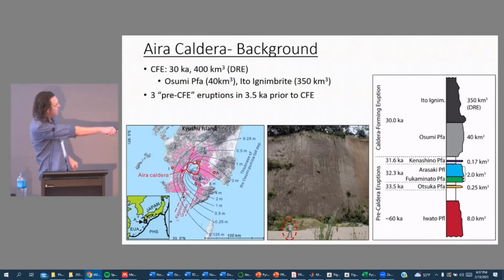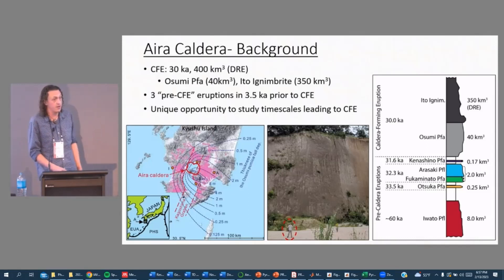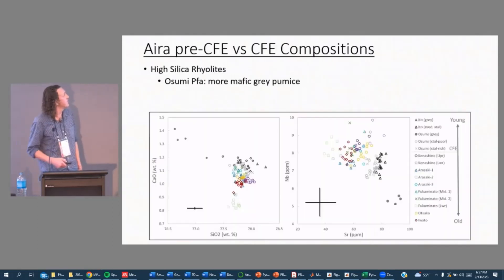What's really interesting about the Aira Caldera system is there were these three pre-caldera eruptions that preceded the Osumi and Ito ignimbrite. Three of them that occurred in the 3500 years before the caldera forming eruption. This provides a unique opportunity to not only study how long does it take to amass that magma for the caldera forming eruption, but also why in a single caldera setting would there be some smaller eruptions, 0.17 to 2 cubic kilometers, and then in a completely different case you have a much larger eruption. So what leads to one of these smaller precursory versus the caldera forming eruption?